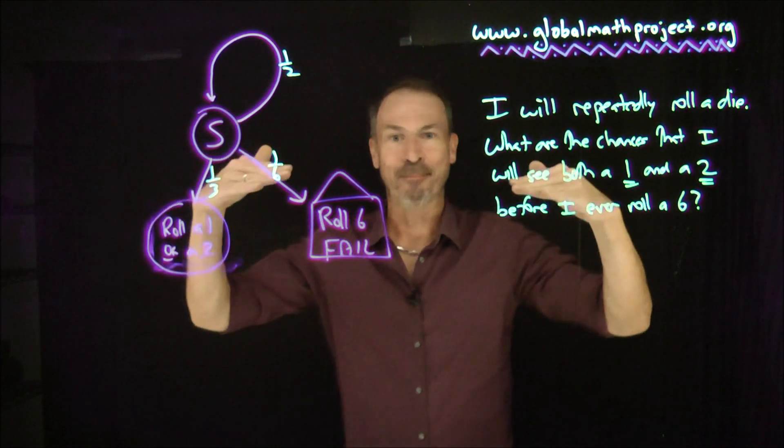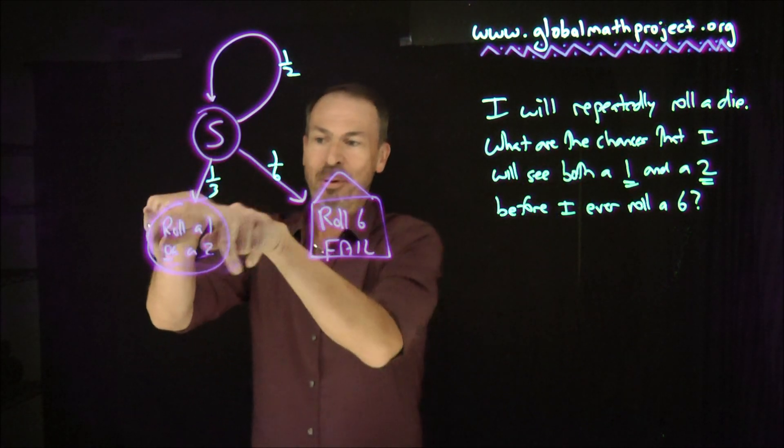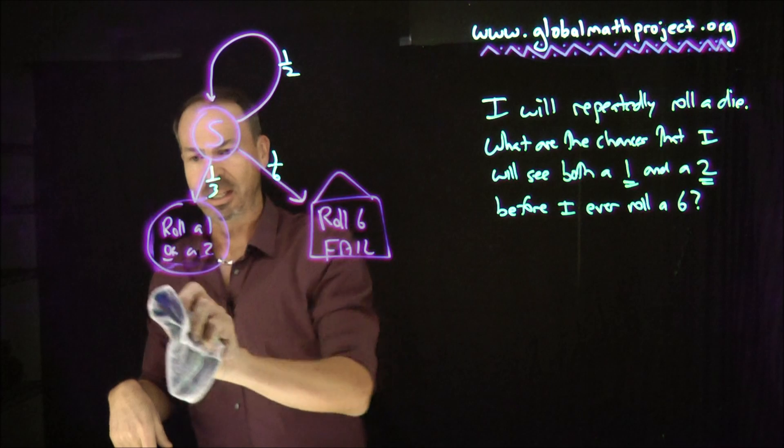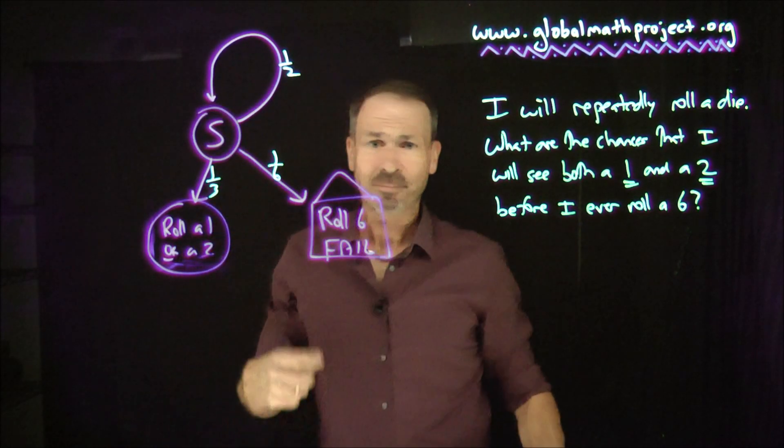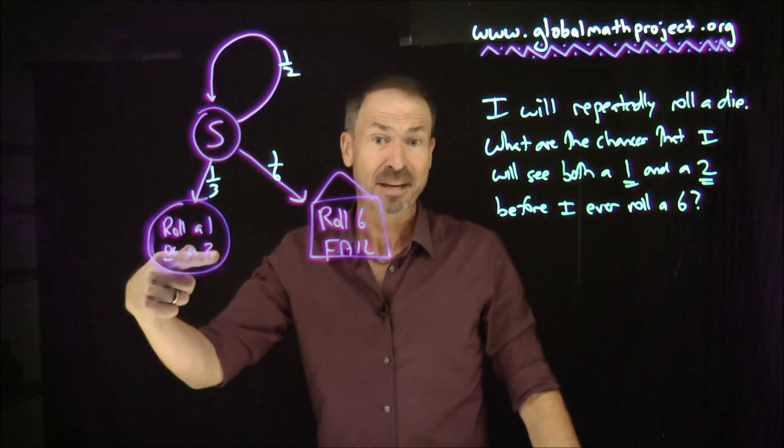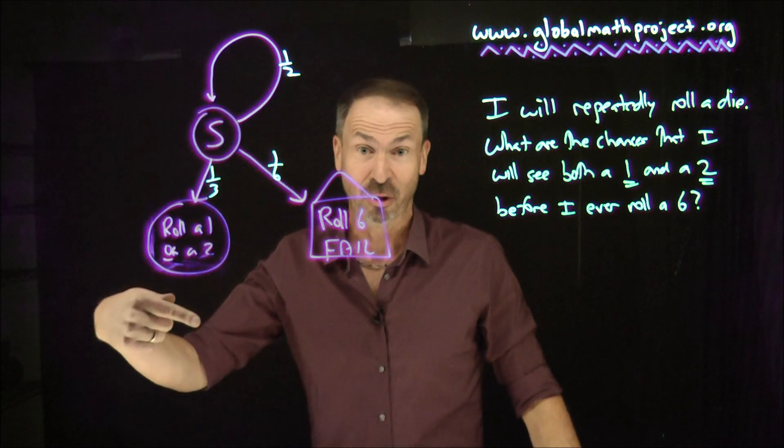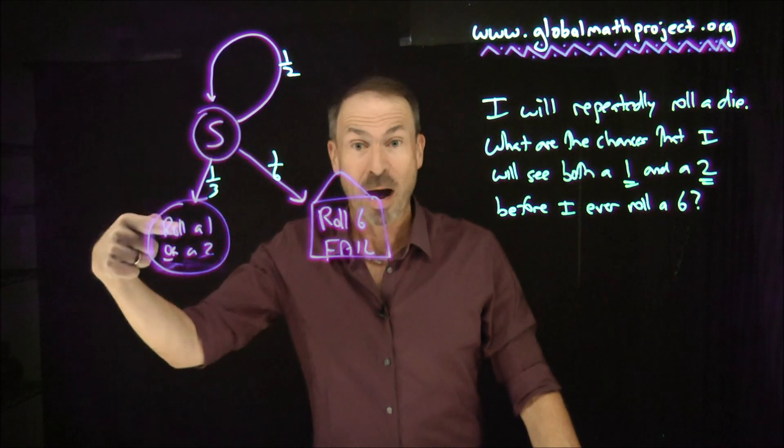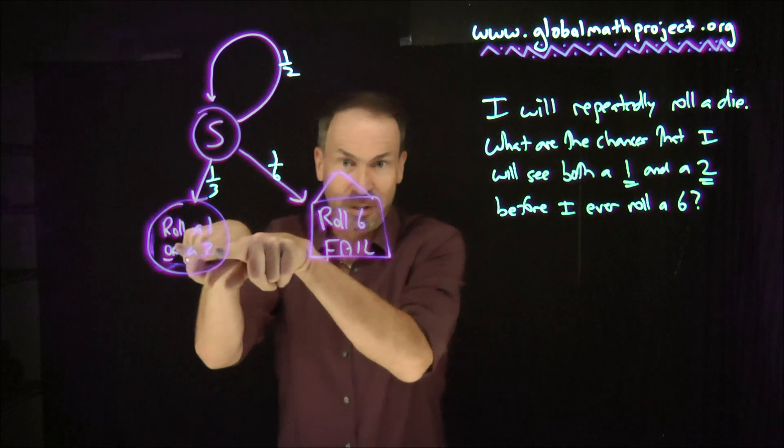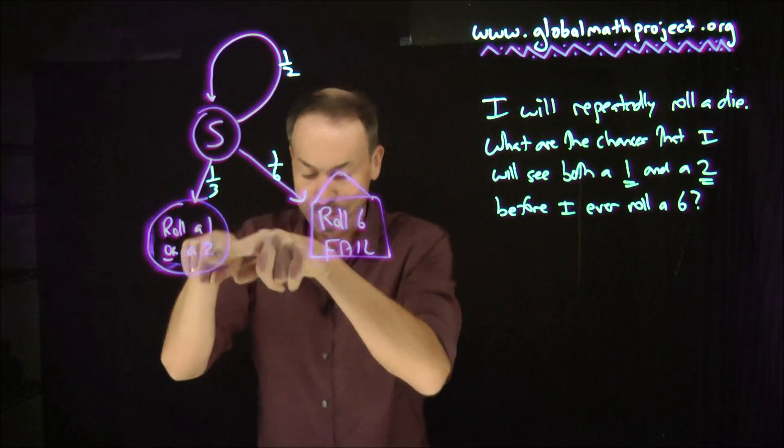Now these people here in the roll 1 or 2, still have to keep going because they need the other number. If they've got a 1, they still need to get a 2 before they get a 6. Or if they've got a 2, they still need to get a 1 before they get a 6. So they've still got to do some work here. So let's see what can happen to these people.